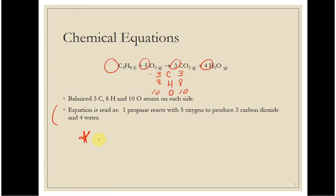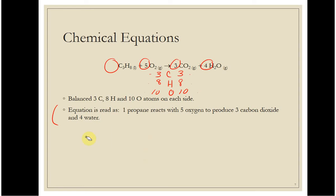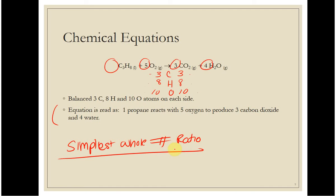Every once in a while in any text, they'll try to use fractions — one half, two-fifths, that kind of thing. I will not do that. I like the simplest whole number ratio. So when we balance, our coefficients should be in the simplest whole number ratio: one (an understood one), five, three, four — you can't divide that by anything to get another set of whole numbers.